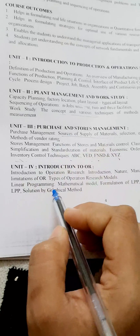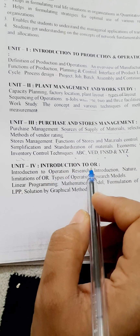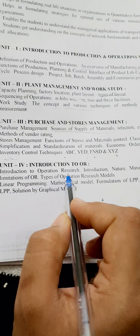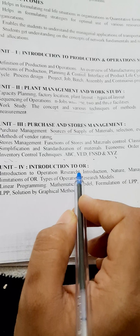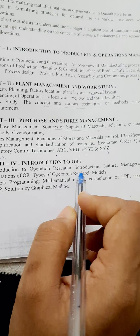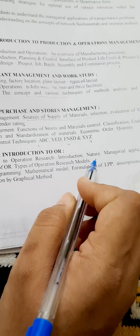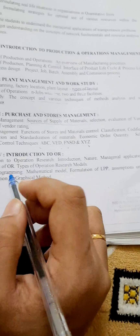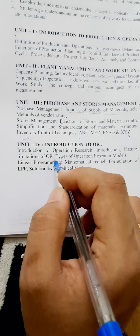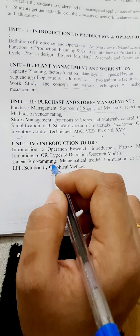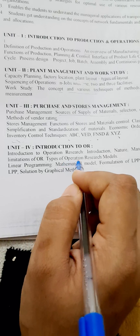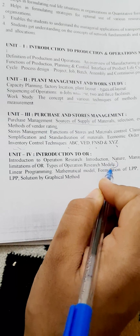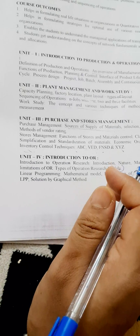Unit four covers Introduction to Operation Research — the introduction, nature, managerial applications, and limitations. Also learn the types of Operation Research models. That is all you need to learn in unit four.